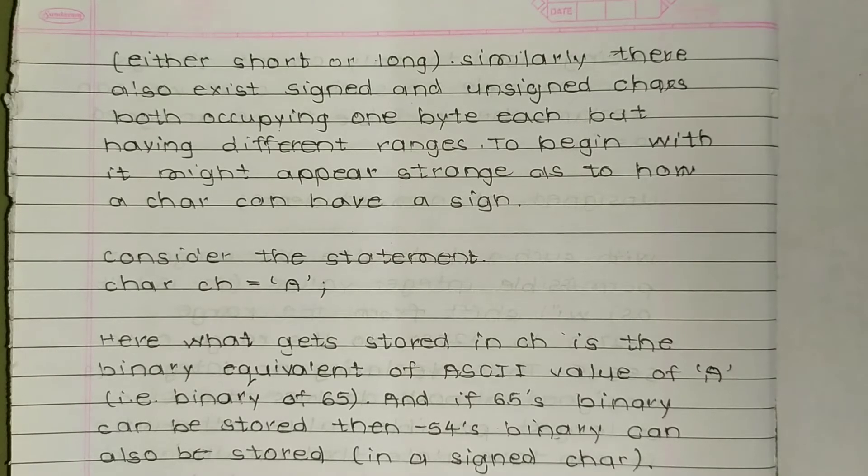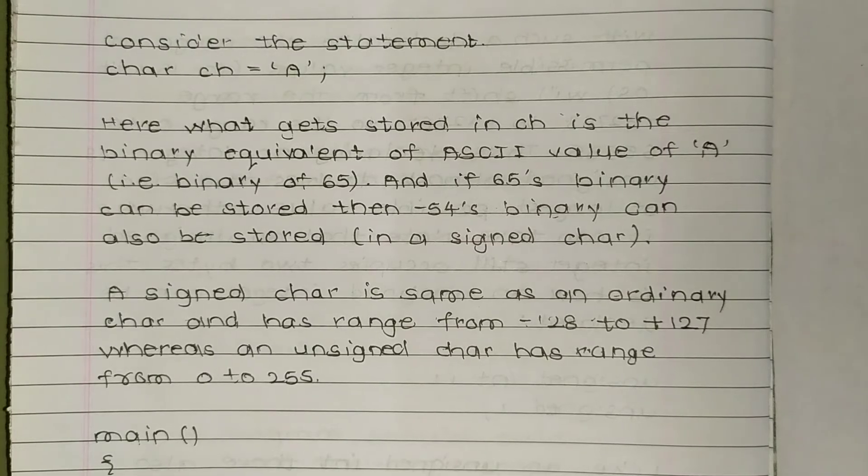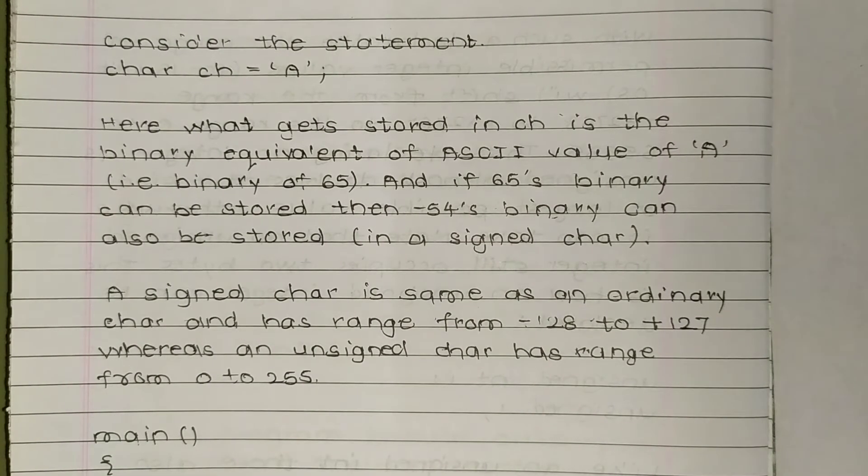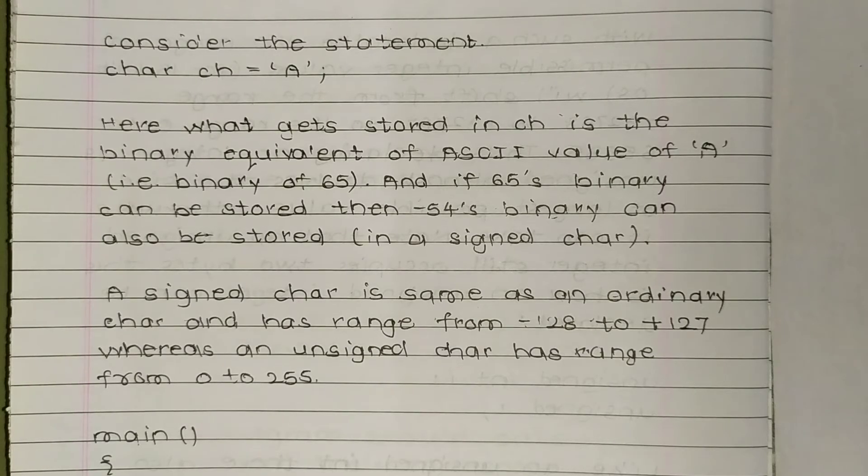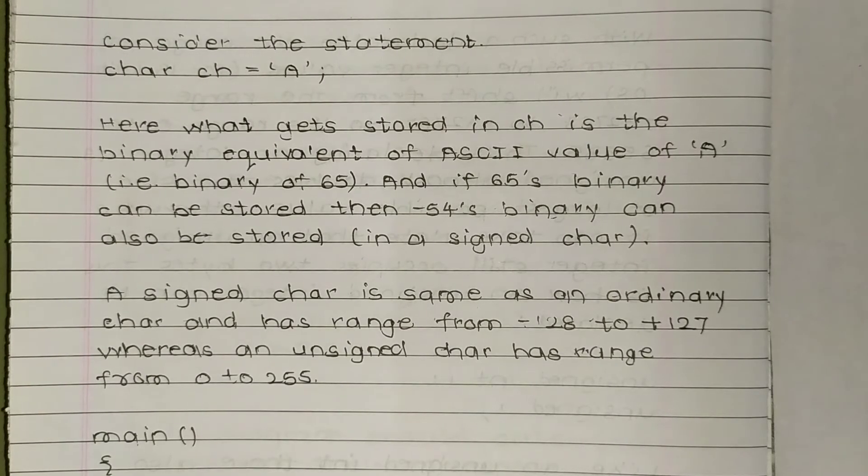To begin with, it might appear strange as to how a char can have a sign. Consider this statement: char ch equals 'a'. Here what gets stored in ch is the binary equivalent of ASCII value of a. So binary of 65 is stored in char a.